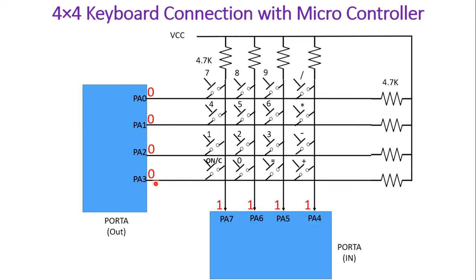First I send 0000 on PA0 to PA3. As there is no connection between columns and rows while all keys are open, all columns PA4 to PA7 will read 1 1 1 1. Now suppose I press key number 5 — there is a short connection between the second column and second row. Due to this short connection, current flows through that path and is grounded to PA1, causing PA6 to read 0 instead of 1. If any value of this column changes from 1 to 0, that means some key has been pressed and we need to start scanning the code.